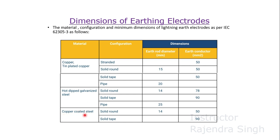For copper coated steel: if the configuration is solid round, the earth rod diameter would be 14 mm and the earth conductor would be 50 square mm. For solid tape configuration, it would be 90 square mm for the earth conductor dimension.